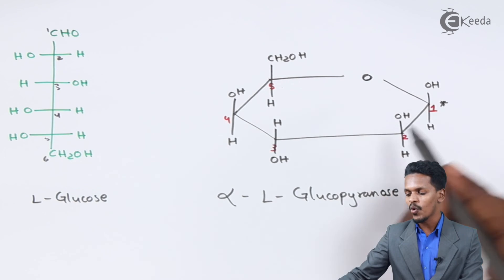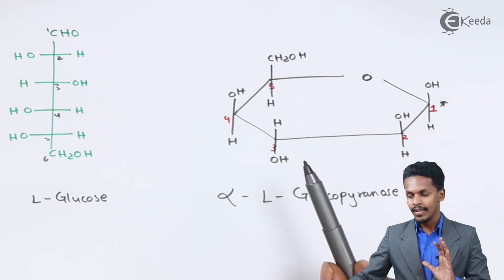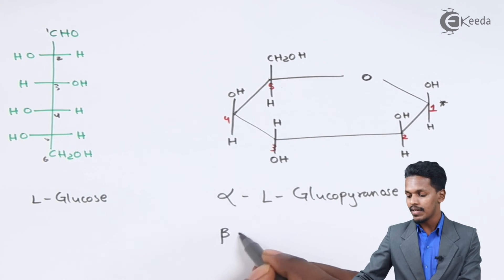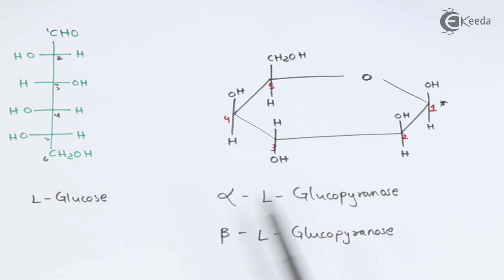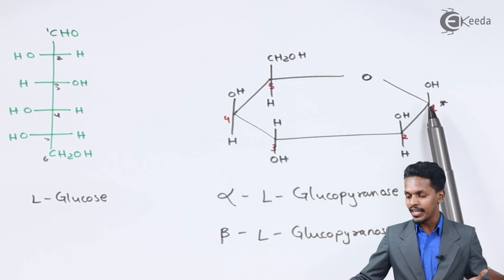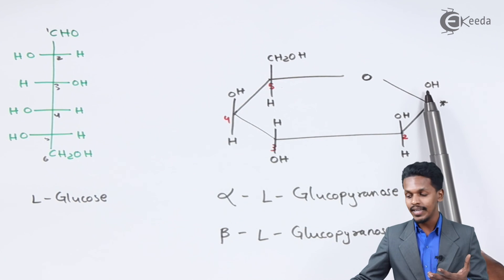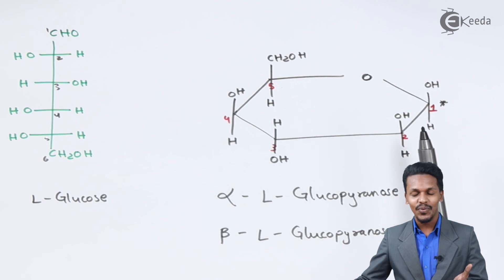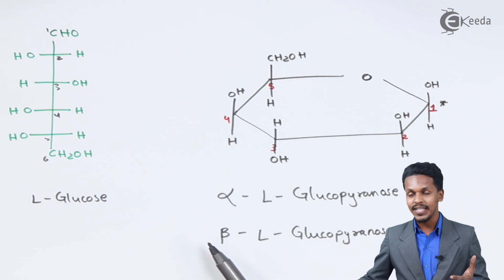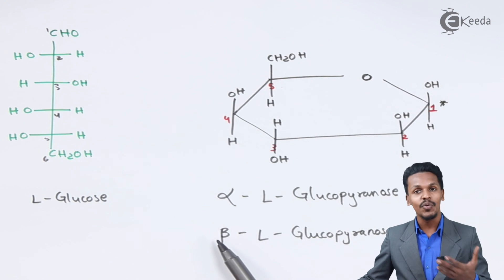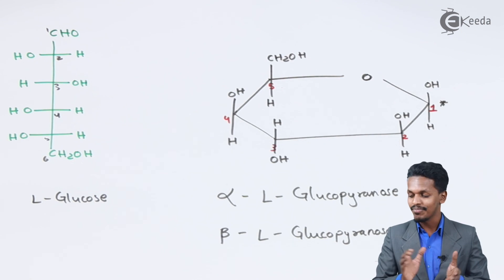For L-glucose, if the OH at the anomeric carbon is in the upward direction and H is downward, it is called alpha-L-glucopyranose. If OH is downward and H is upward, it is called beta-L-glucopyranose. Comparing D and L glucose: for D-glucose OH down at C1 = alpha, but for L-glucose OH up at C1 = alpha — they are vice versa.